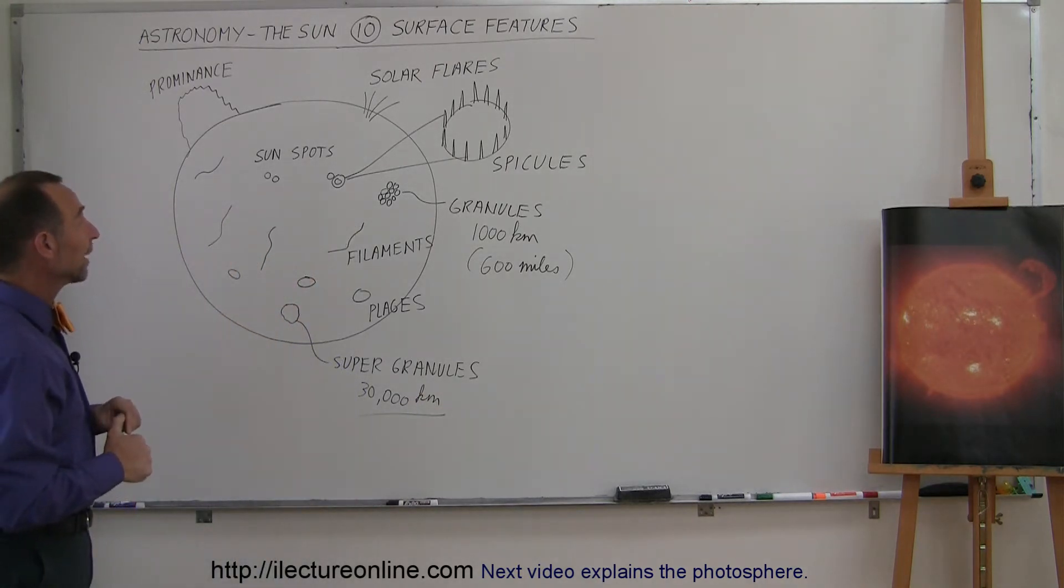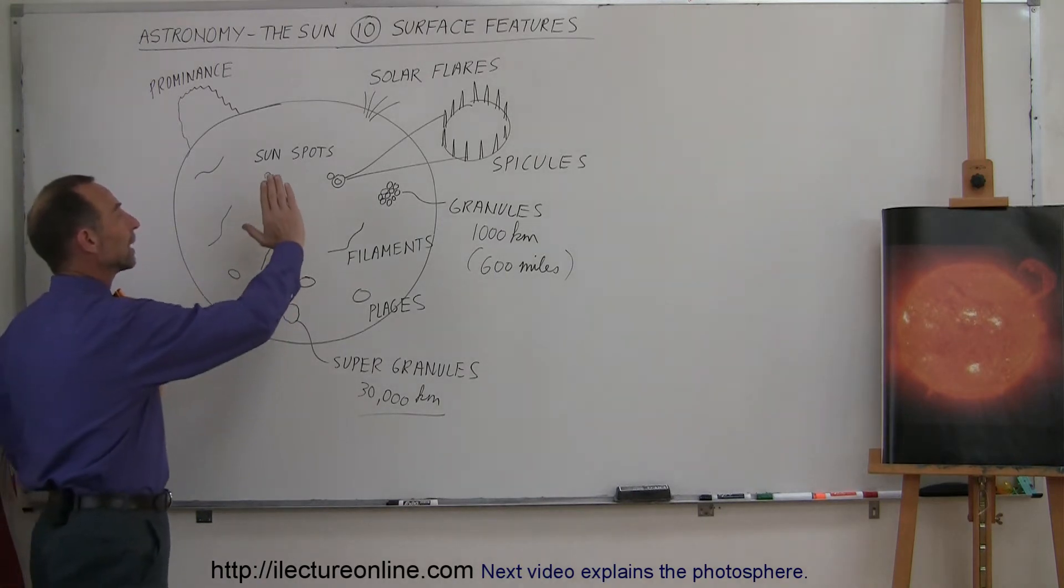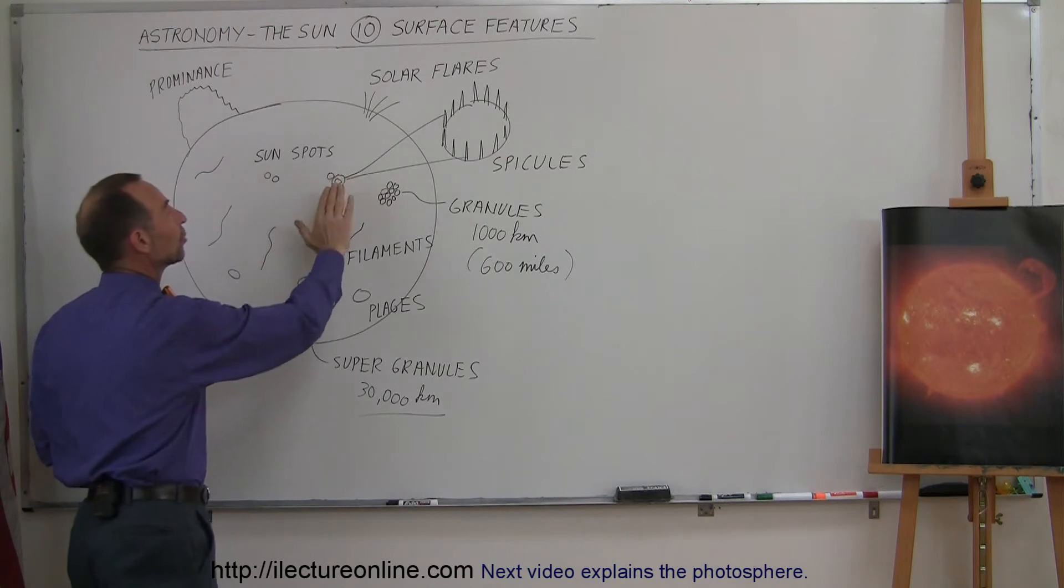Now, other things that you find in the Sun, of course, sunspots. We've done a few videos on the sunspots. Again, that's where the magnetic fields prevent the heat from coming to the surface and make it cooler and darker.